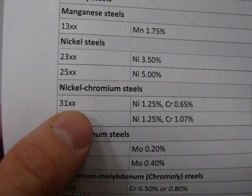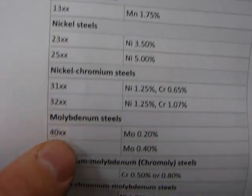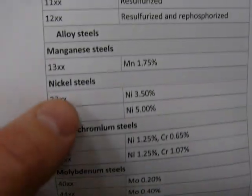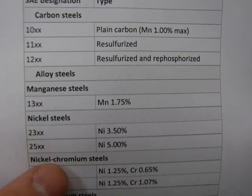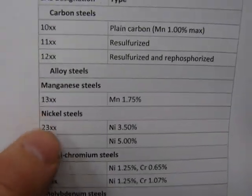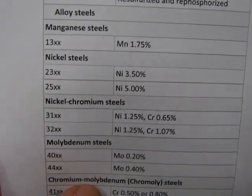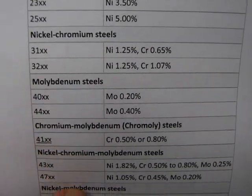Now here where you see X's, the carbon content is going to plug in there in all of these steel designations, and the rest of the digits mean a certain percentage of manganese or nickel or whatever the steels contain.